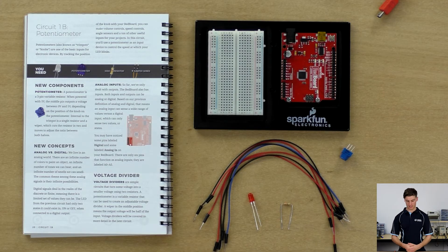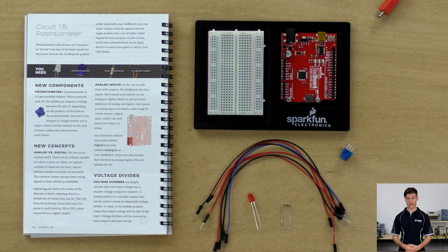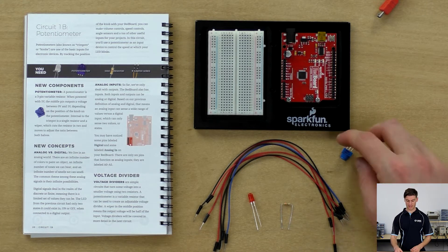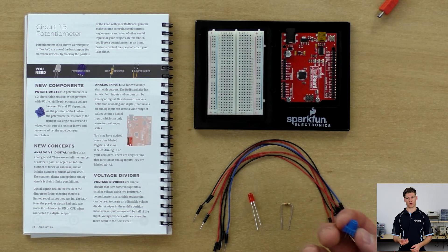Similarly to our last circuit, circuit 1A, we'll be using an LED, resistor, and some jumper wires, but now we have an added analog component called a potentiometer.